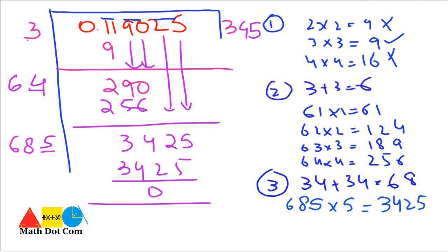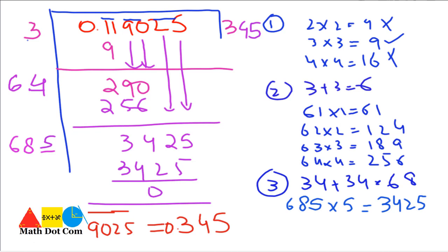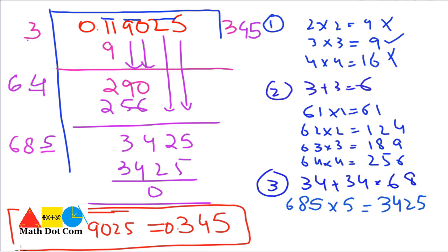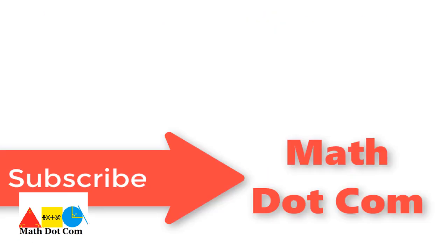This means the square root of 0.119025 equals 0.345. So 0.345 is the square root of this decimal number. This was all about how you can find the square root of a decimal number by the division method. Thank you for watching — if you like this video, please subscribe.